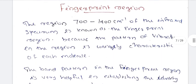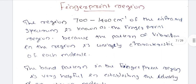Next, we have the fingerprint region. The region 700 to 1,400 cm⁻¹ of the infrared spectrum is known as the fingerprint region, because the pattern of vibration is uniquely characteristic to each of the molecules.